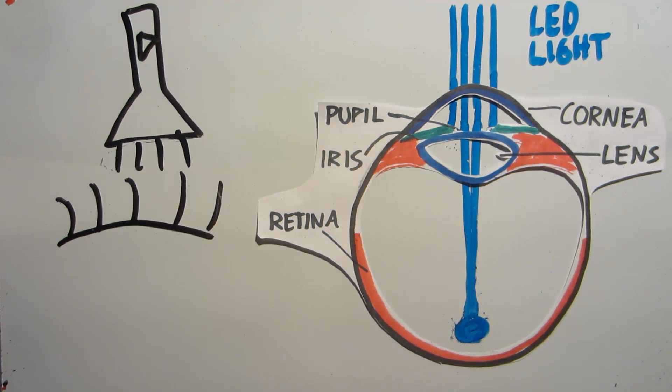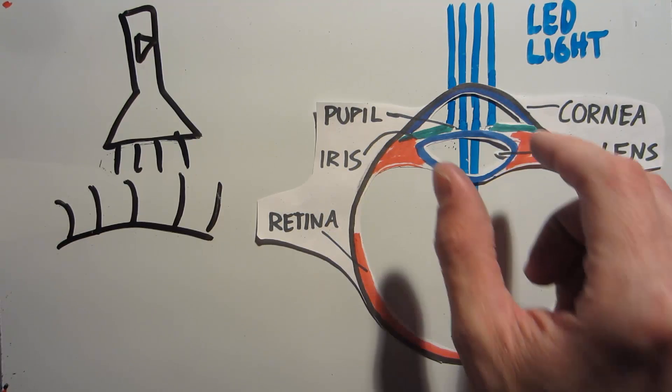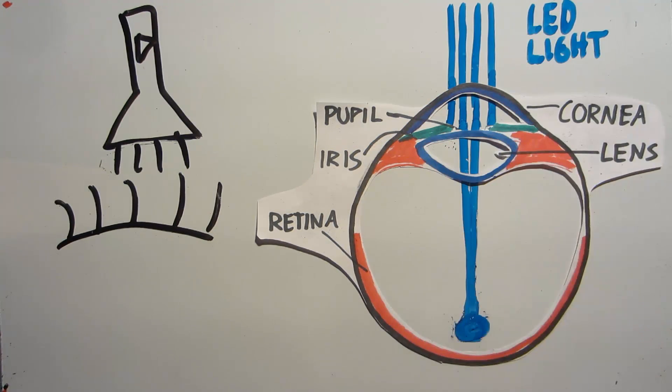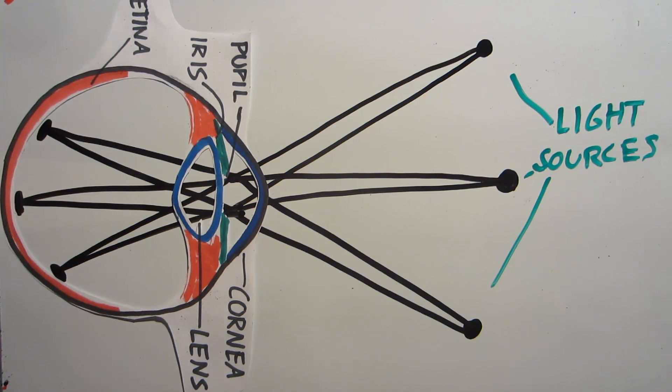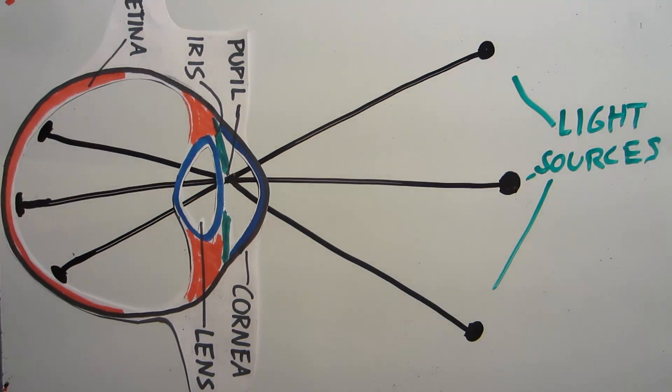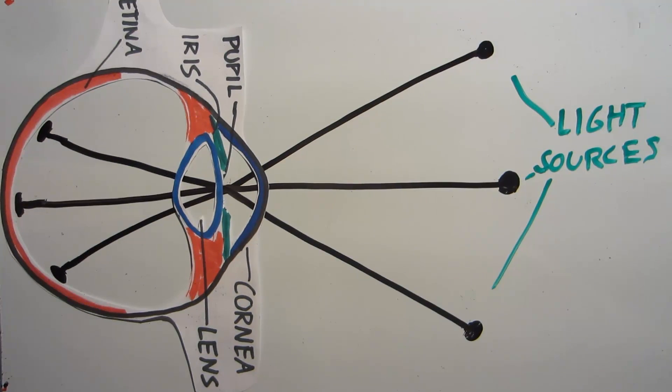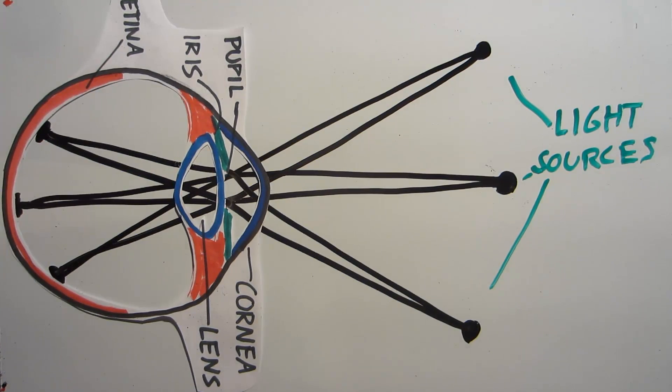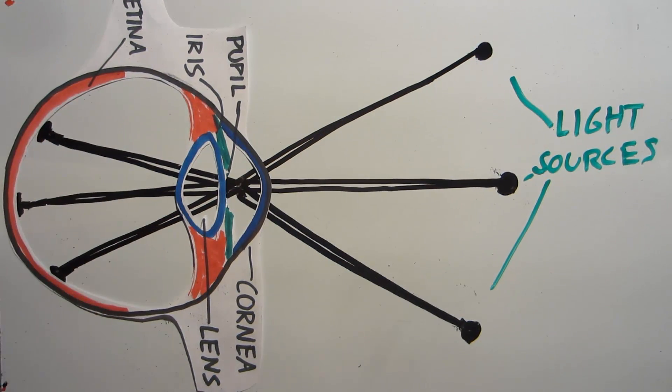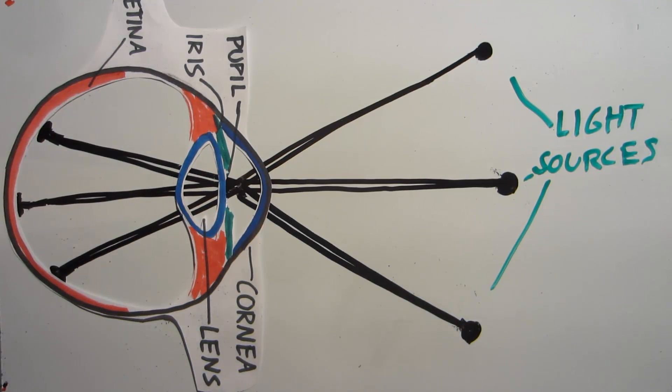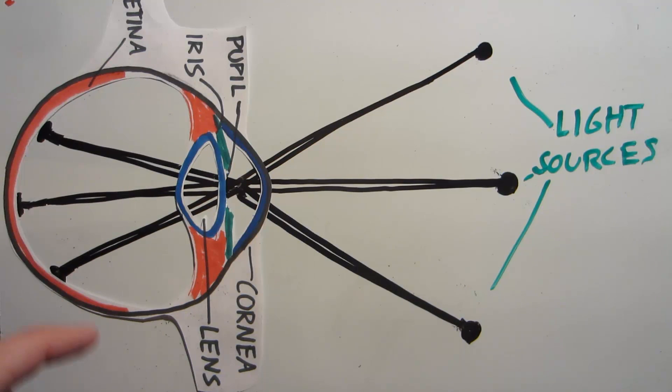And this is why your pupils contract. Having your pupils contract allows you to see the same image while getting less light from each object. So what's really going on here is that your pupil is effectively kind of holographic. Every single point on your pupil is passing through information from the entire scene that you're seeing. And this is why when your pupil contracts and you close off that outer ring of your pupil, it's now gone and blocking light. You don't lose any peripheral vision or anything. The image just gets dimmer.